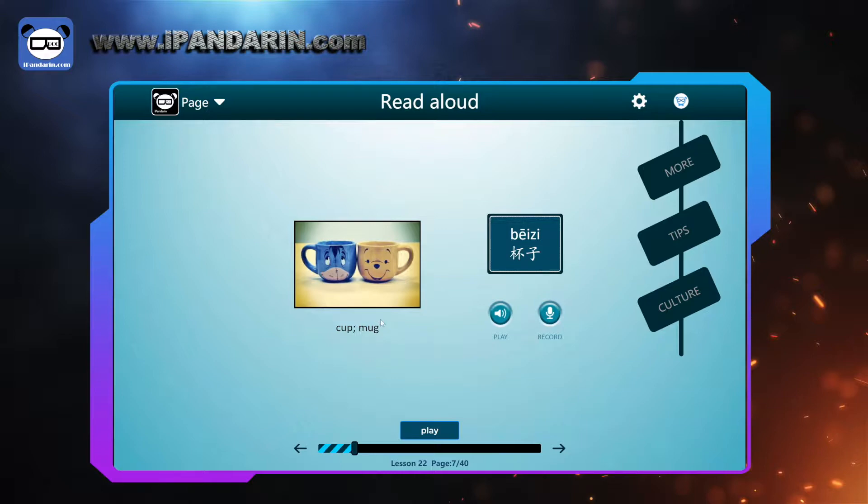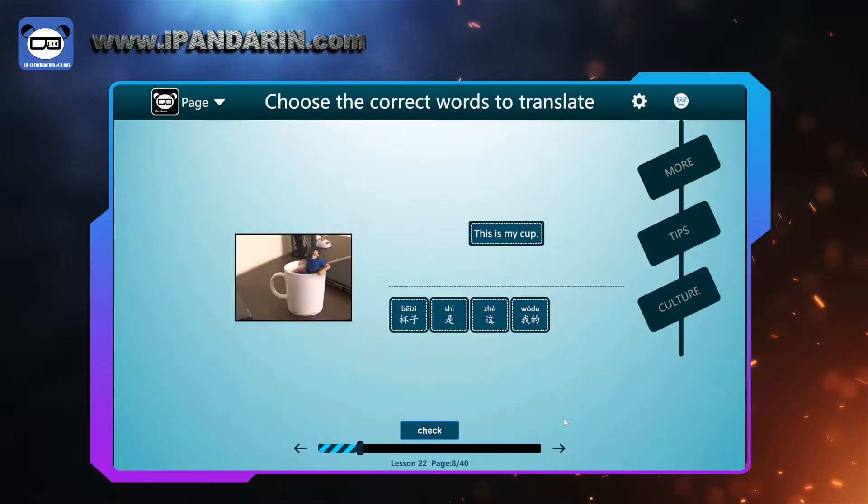To buy cups. Cup, mug. 杯子. Speak after me. 杯子. 杯子. Again. 杯子. 杯子. Two cups. 两个杯子. This is my cup. 这是我的杯子.